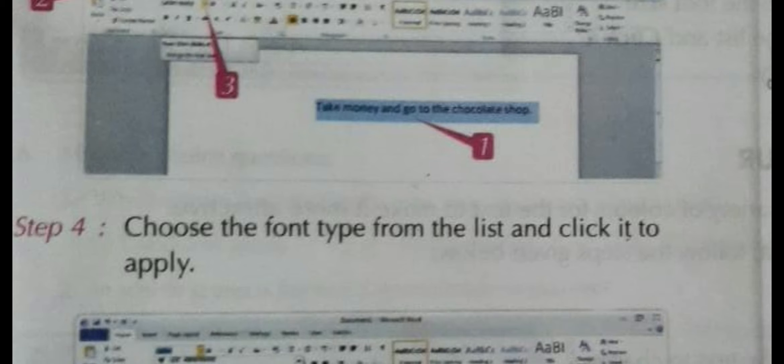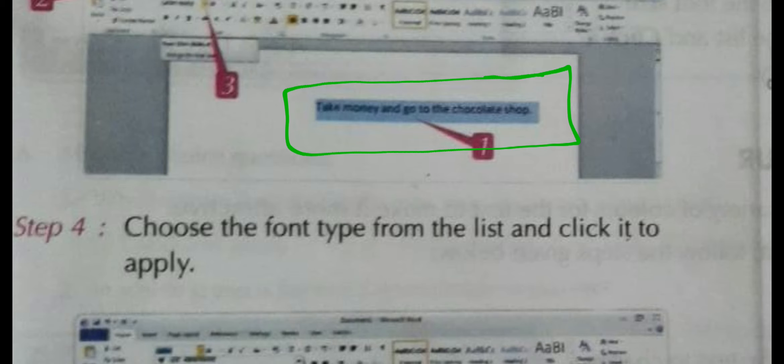Click on the drop-down arrow and different kinds of font style options will appear. Select the word or sentence you want to change, then click on different kinds of styles. Whichever style you find suitable, select it as per your wish and continue your work.